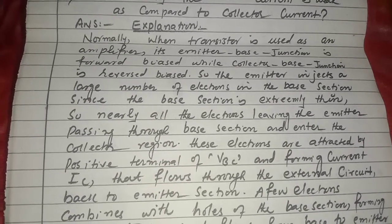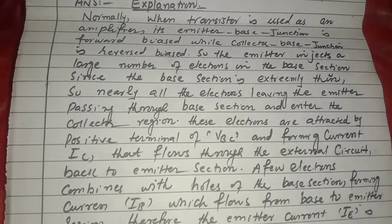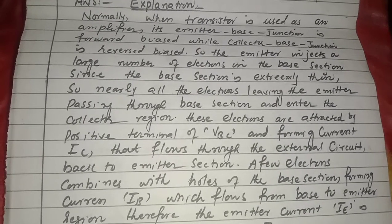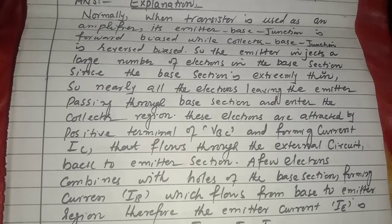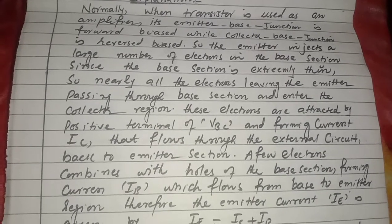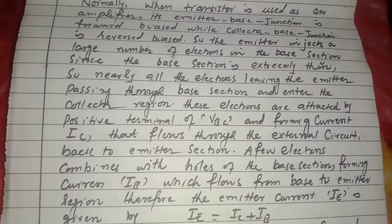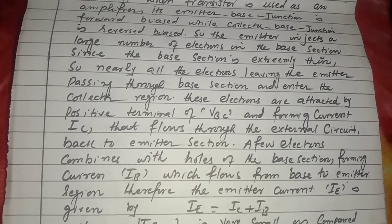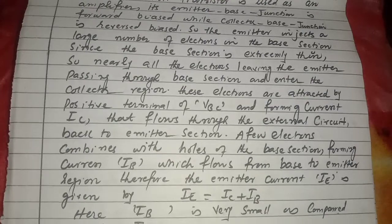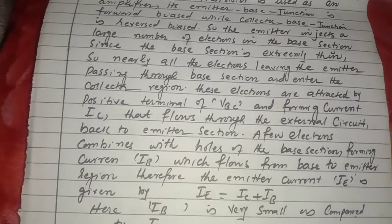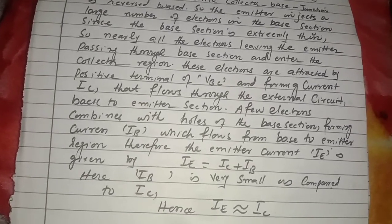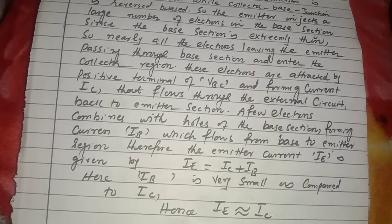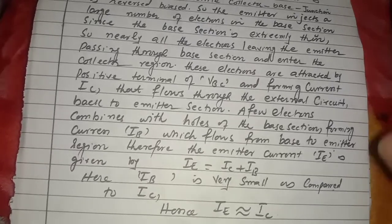They flow through the external circuit back to the emitter section. A few electrons combine with the holes of the base section, forming current IB, which flows from base to emitter region. Therefore, the emitter current IE is given by IE = IC + IB. IB is very small as compared to IC, so IE very closely approaches IC.